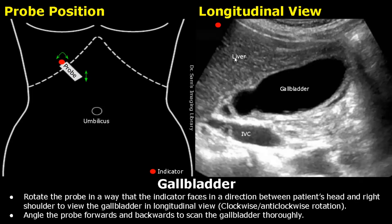This is the image we will get. This is the liver just below the costal margin and anterior to the gallbladder, and the gallbladder is seen in a longitudinal view. Normally it has a vertical position — the fundus is facing the patient's feet and the neck is facing the patient's head. That is why we see it like this on ultrasound.